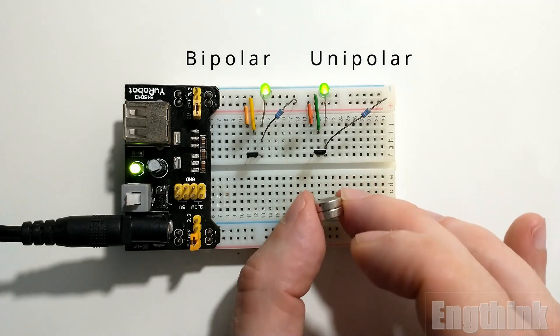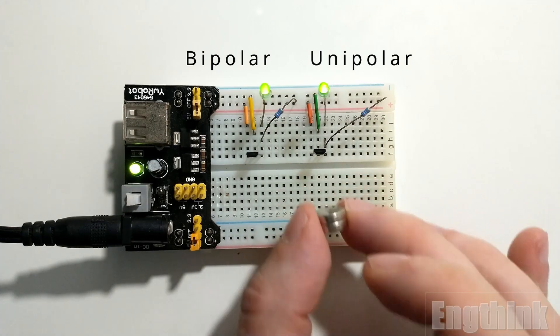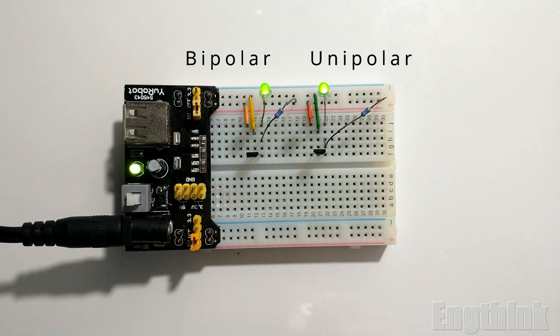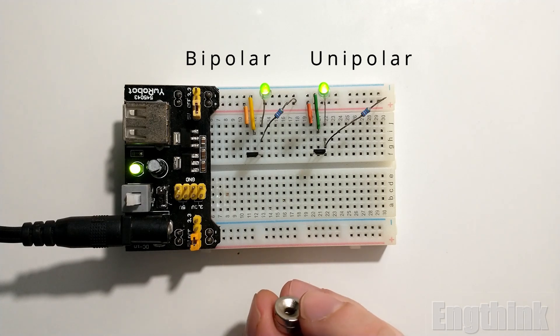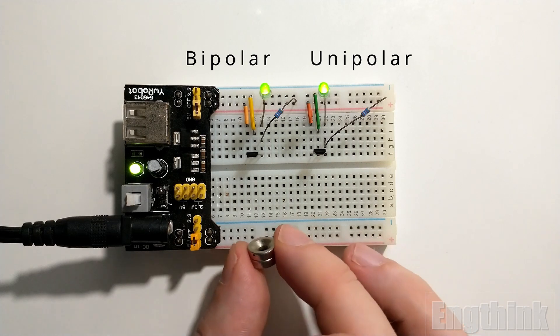Let's try now to test the Hall effect sensor bipolar on the left side of the breadboard. As the name indicates, this sensor will work with north pole and south magnetic pole. Let's try with the south pole of the magnet.